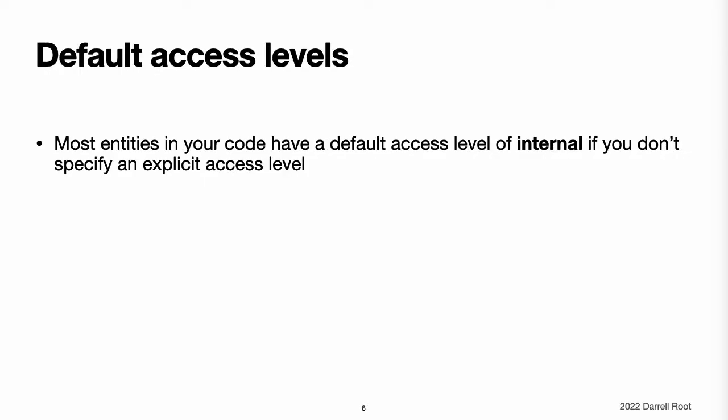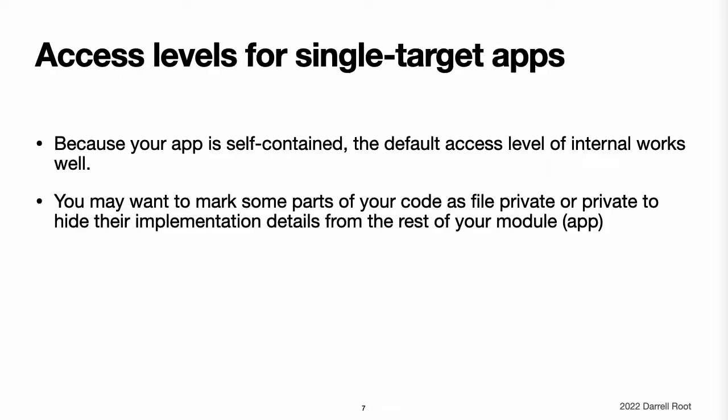Default access levels. All entities in your code, with a few specific exceptions as described later in this chapter, have a default access level of internal if you do not specify an explicit access level yourself. As a result, in many cases you do not need to specify an explicit access level in your code. Access levels for single target apps. When you write a simple single target app, the code in your app is typically self-contained within the app and does not need to be made available outside of the app's module. The default access level of internal already matches this requirement. Therefore, you do not need to specify a custom access level.